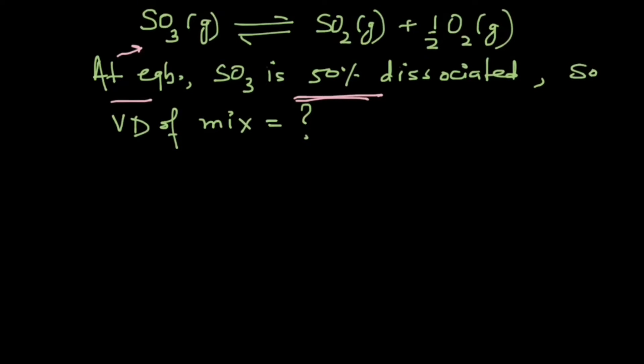First thing is that we need to know what is vapor density. Vapor density is equal to the molar mass upon 2. This is the formula that you should use.